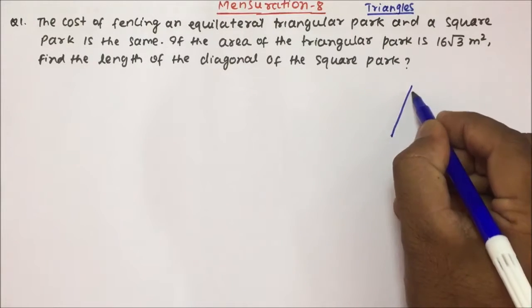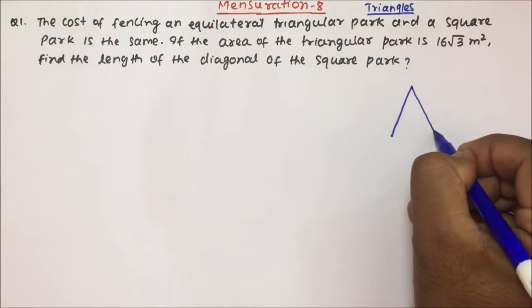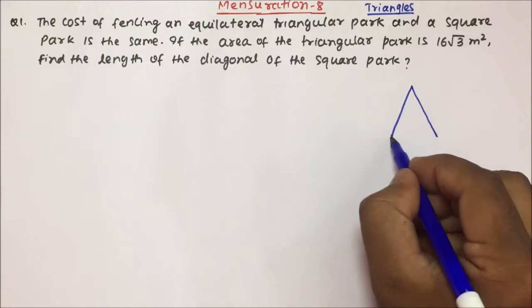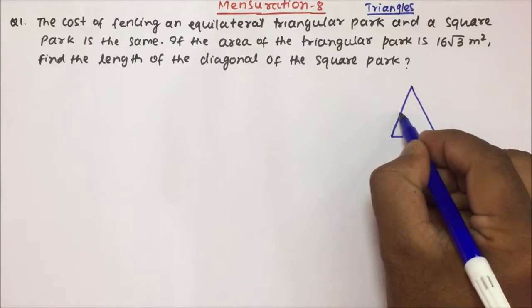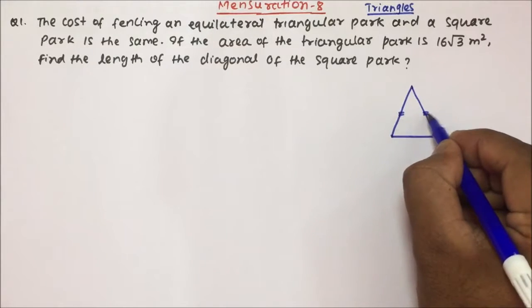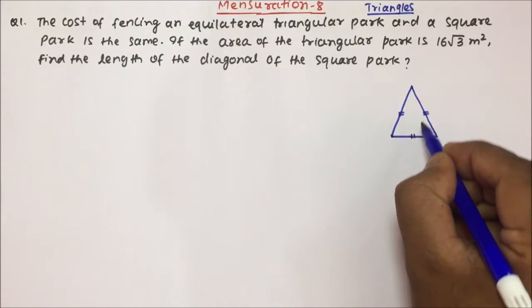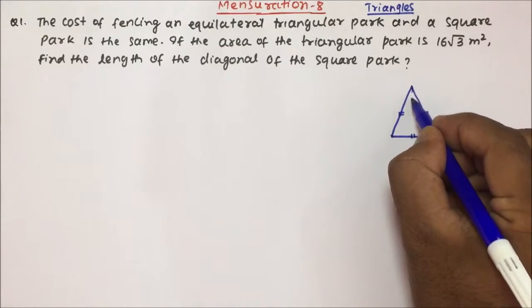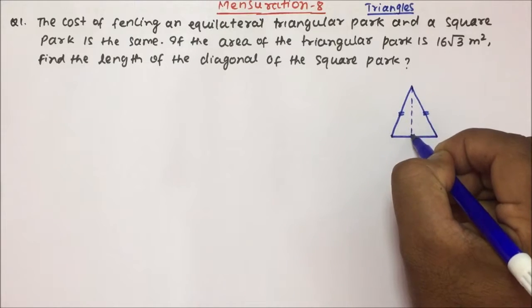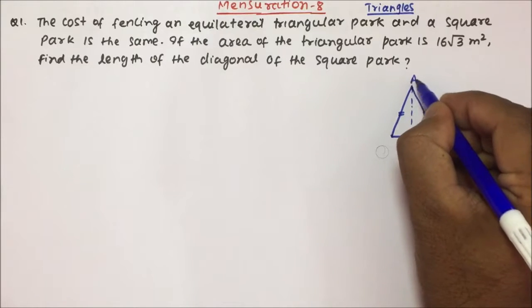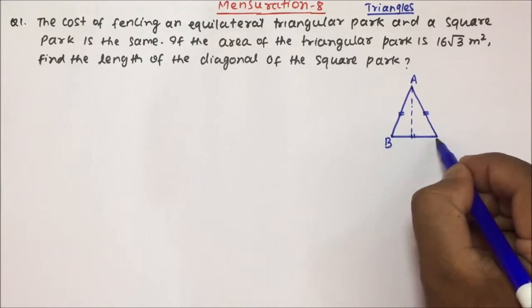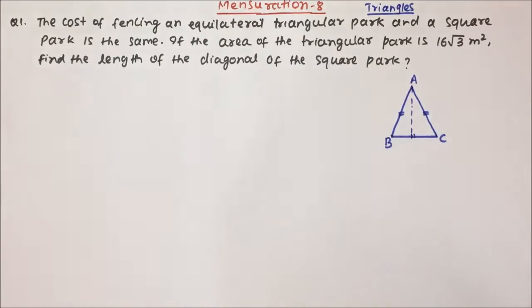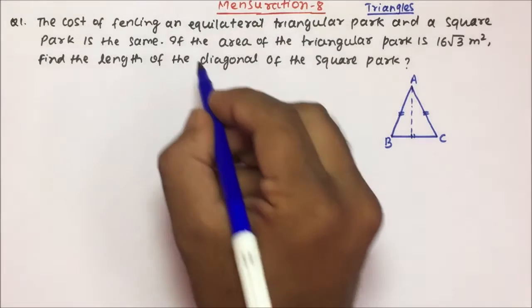So friends, equilateral triangular park — equilateral triangle means all the three sides will be equal. This is A, this is B, and this is C. For the equilateral triangle, all the three sides will be equal.